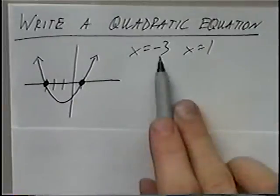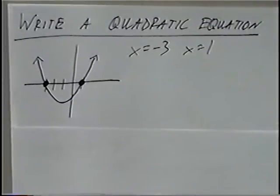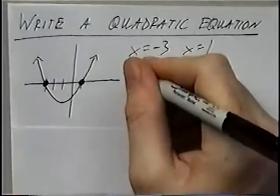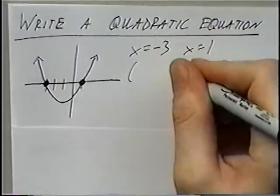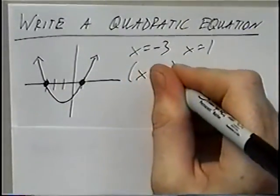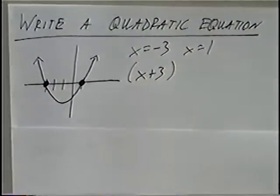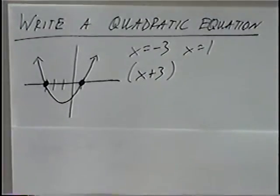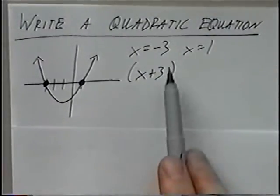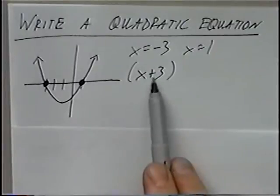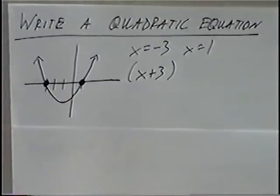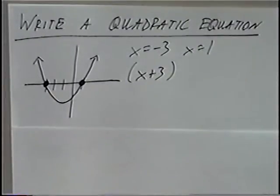Taking these two values, we can write the quadratic equation. If we know one answer is negative 3, one of the factors will have to be x plus 3. The opposite of negative 3 gives us the plus 3, and plugging negative 3 in will make this value 0, which is a solution to the quadratic equation.